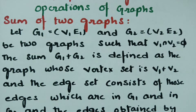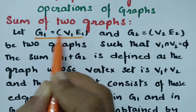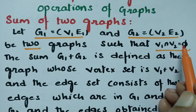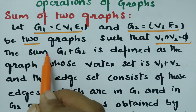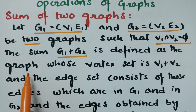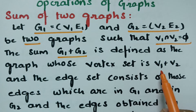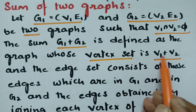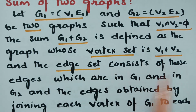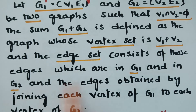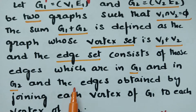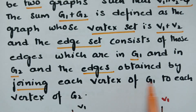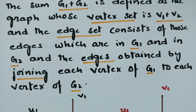Next is the sum of two graphs. Let g1 = (v1, e1) and g2 = (v2, e2) be two graphs such that v1 ∩ v2 is empty, meaning there are no common vertices. The sum g1 + g2 is defined as the graph whose vertex set is v1 ∪ v2 and whose edge set consists of all edges in g1 and g2, plus the edges obtained by joining each vertex of g1 to each vertex of g2.